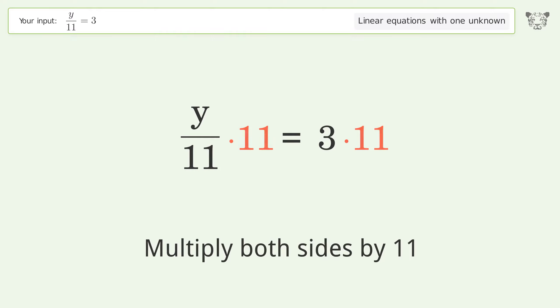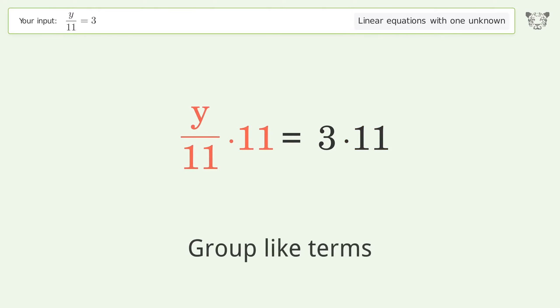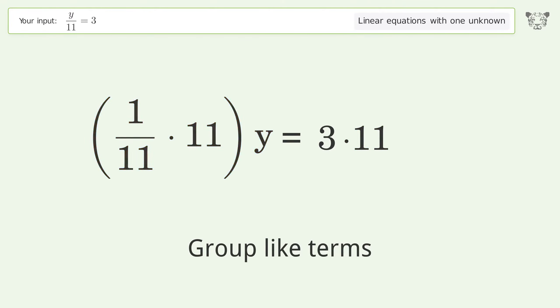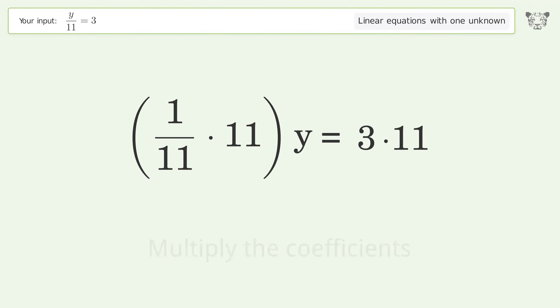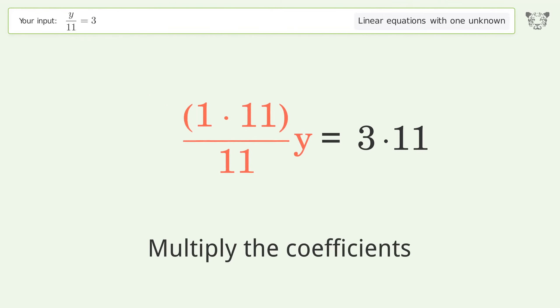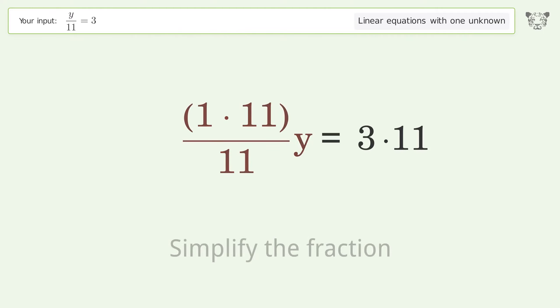Isolate the y: multiply both sides by 11. Group like terms, then multiply the coefficients.